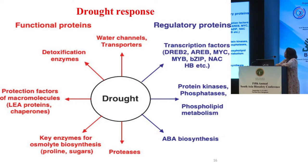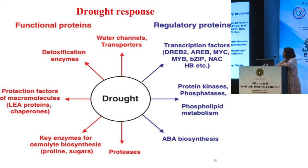To summarize what I've been saying: drought response can be regulated through regulatory proteins — transcription factors, protein kinases, phospholipid metabolism, and ABA biosynthesis — or through functional proteins such as water channel transporters, detoxification enzymes, protection factor micromolecules, and key enzymes in the osmolite biosynthesis pathway, which control proline and sugar interactions, and proteases. So you can do it in multiple ways, either through regulation or through functionality being affected.